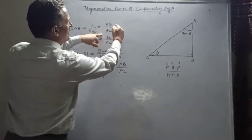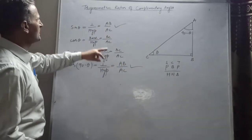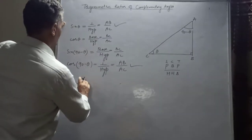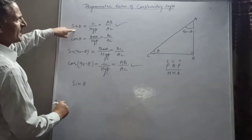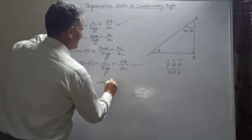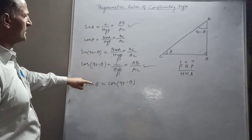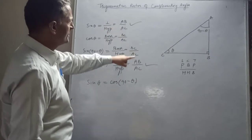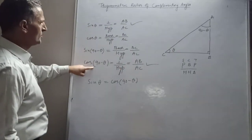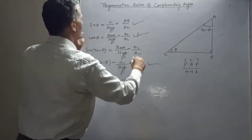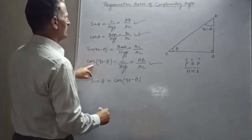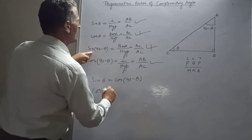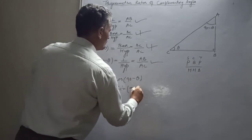Now, AB over AC appears in both sin theta and cos of (90 minus theta), and BC over AC appears in both cos theta and sin of (90 minus theta). If you equate the two results, you get: sin theta equals cos of (90 minus theta), and cos theta equals sin of (90 minus theta). These are the key complementary angle identities.